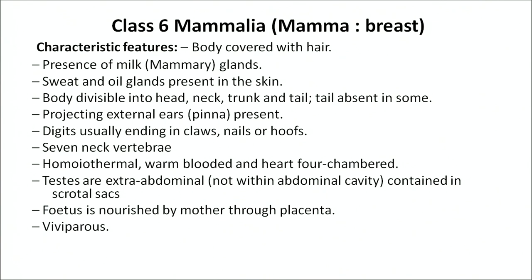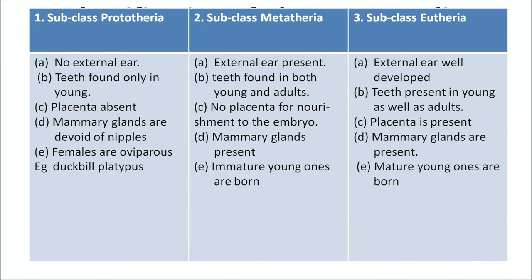Class Mammalia: 'mamma' means breast. Characteristic features: body is covered with hair; mammary glands are present which provide milk to offspring. Sweat and oil glands are present in the skin. Body is divisible into head, neck, trunk, and tail (tail absent in some). Projecting external ears (pinna) are present. Digits usually end in claws, nails, or hooves. Dentition is thecodont — teeth in sockets of jaw bones — and generally heterodont, with four different types of teeth. They have 7 neck vertebrae; homeothermal (warm-blooded). Heart is four-chambered. Testes are extra-abdominal in scrotal sacs. They are viviparous — giving birth to young. Some primitive mammals are oviparous. Fetus is nourished through the placenta. It is further divided into three subclasses: Prototheria, Metatheria, and Eutheria.